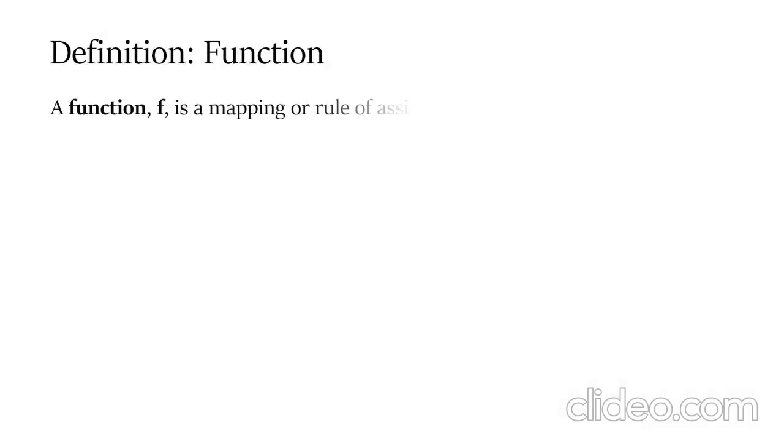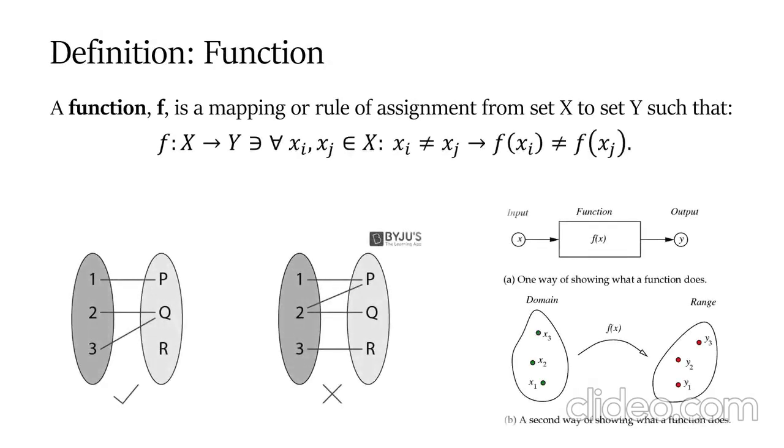Definition: A function f is a mapping, a rule of assignment from set X to set Y, such that f maps from X to Y such that distinct inputs map to distinct outputs.